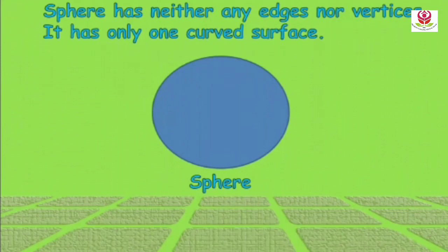The 3D shapes which have a flat surface, they slide. For example, cuboid and cube — they slide. Whereas 3D shapes which have a curved surface, they roll. For example, sphere and cylinder — they roll when they are moved because they have a curved surface.